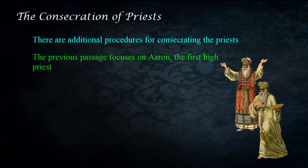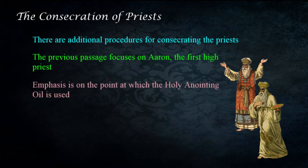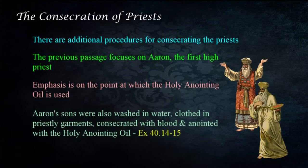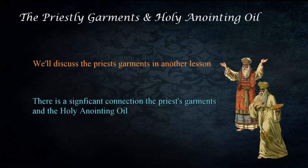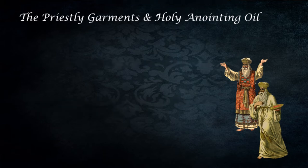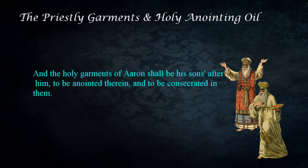There are additional procedures for the consecration of the priests, but these focus on Aaron, the first high priest, and the point at which the holy anointing oil is used. Examining the text, we find that Aaron's sons were also washed in water, clothed in priestly garments, consecrated with blood, and anointed with the holy anointing oil in Exodus 40:14–15. There's a significant connection between the holy anointing oil and the priestly garments: "And the holy garments of Aaron shall be his sons' after him, to be anointed therein, and to be consecrated in them." — Exodus 29:29.